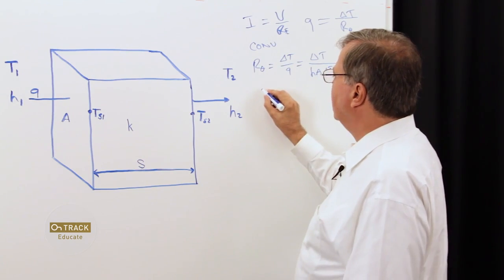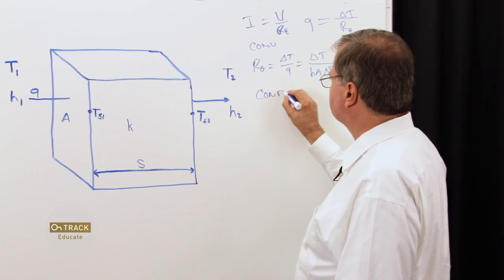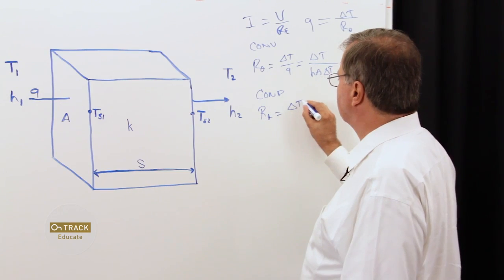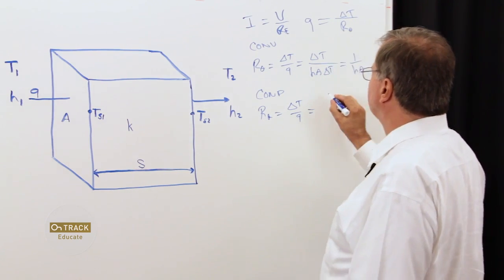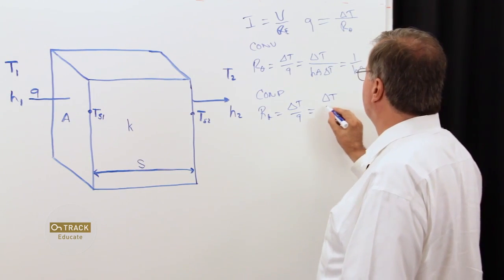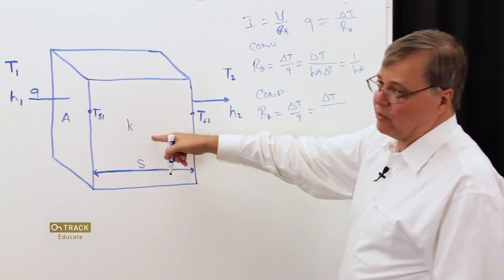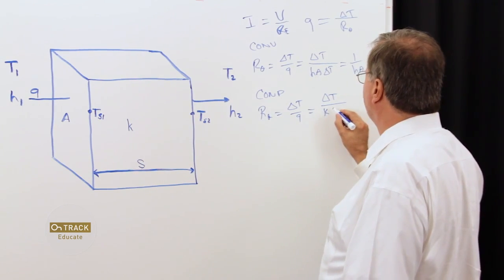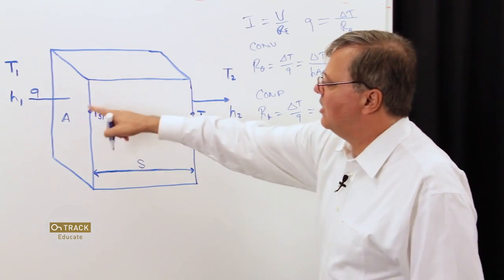Then, for our conduction model, we have R theta is equal to delta T over Q, which is equivalent to delta T over our thermal conductivity of our solid region, K,